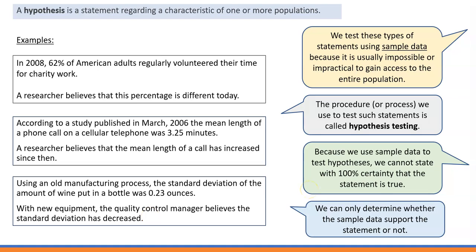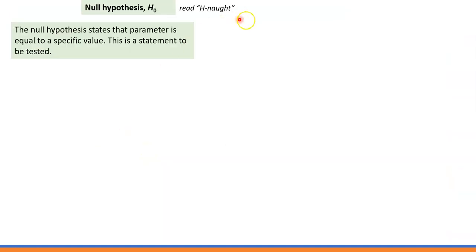As you can see in all these examples, there are actually two statements, and each statement has its own name. The first sentence in all those examples, where the specific characteristic of the population was provided, is called the null hypothesis.